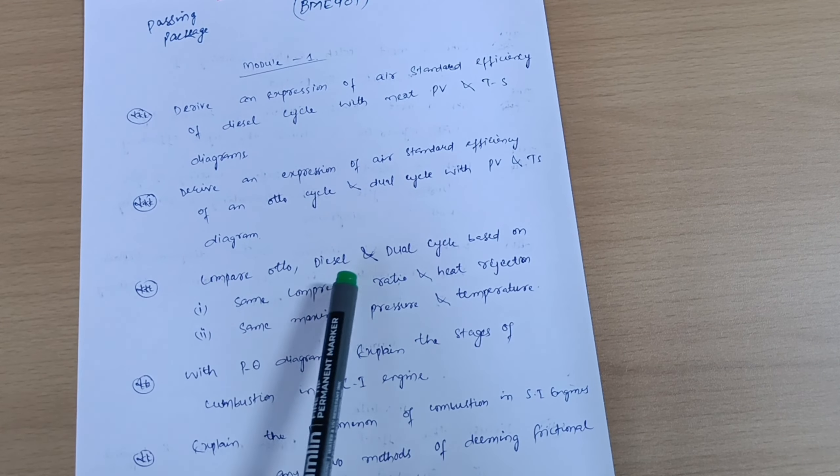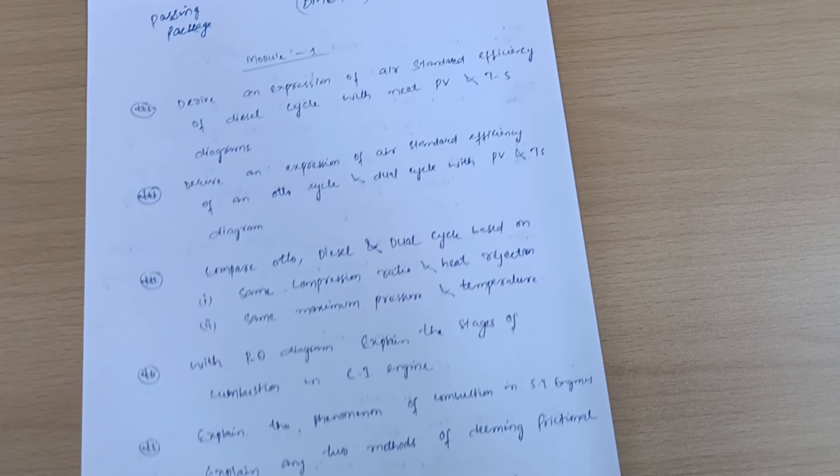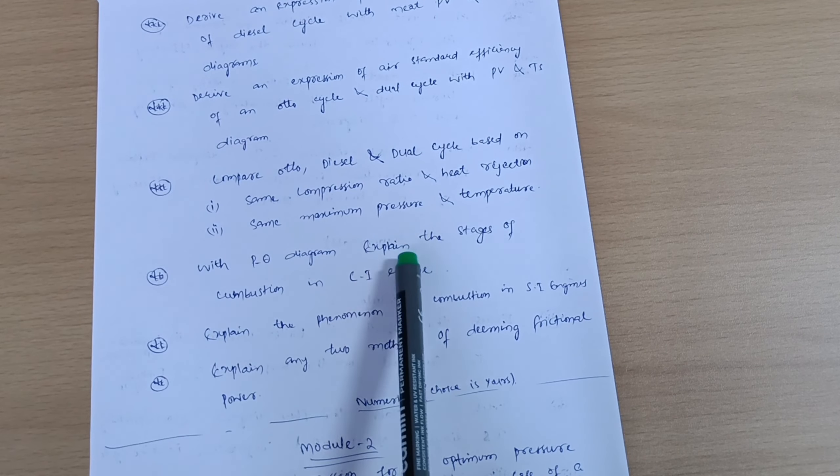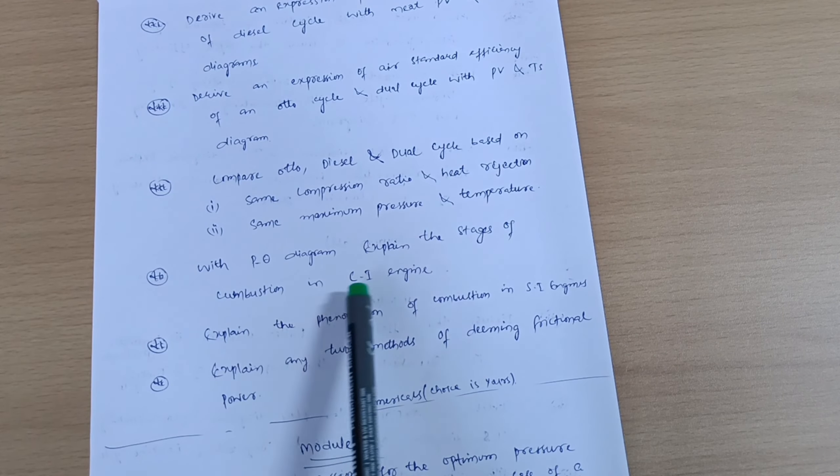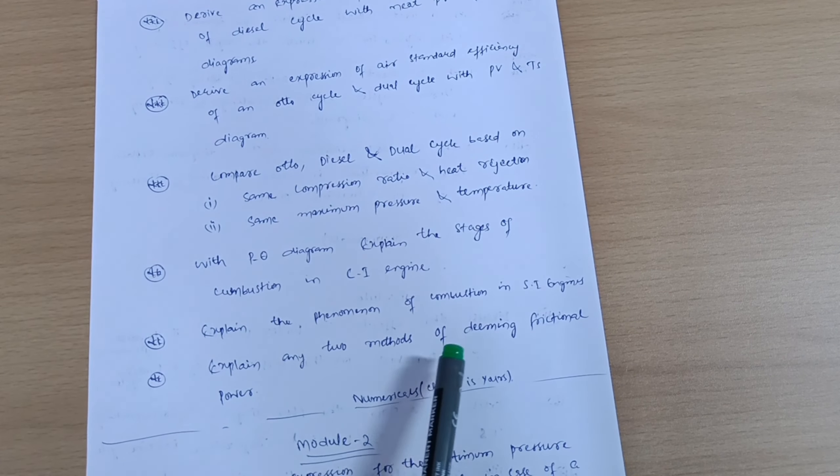Next is: compare Otto, diesel, and dual cycle based on same compression ratio and heat rejection, same maximum pressure and temperature. Next, with the P-theta diagram, explain the stages of combustion in CI engine. Explain the phenomena of combustion in SI engines, and explain any two methods of determining frictional power.